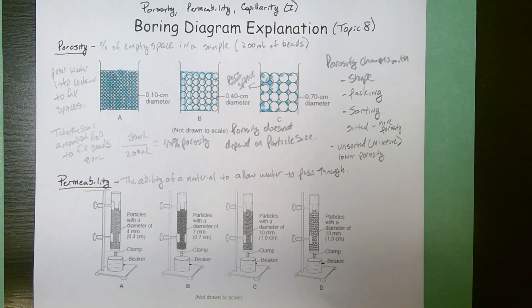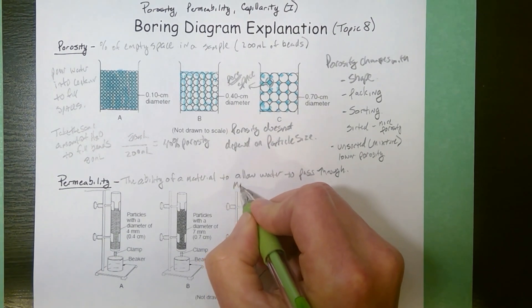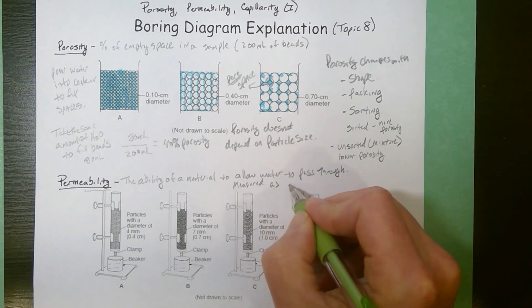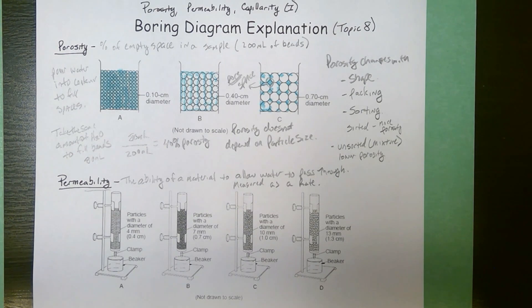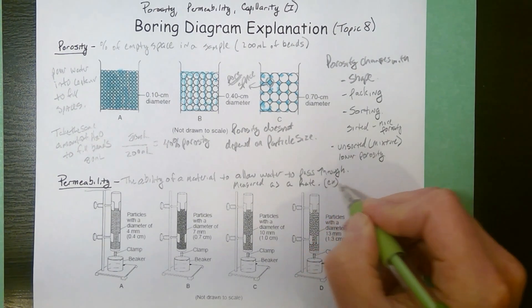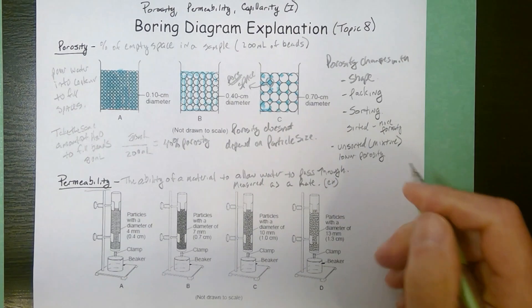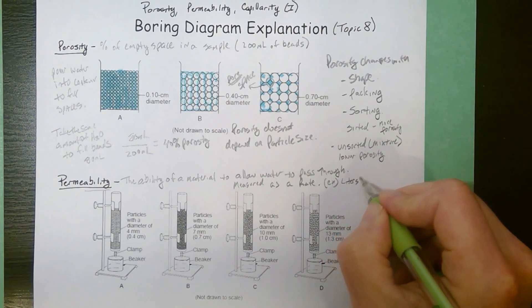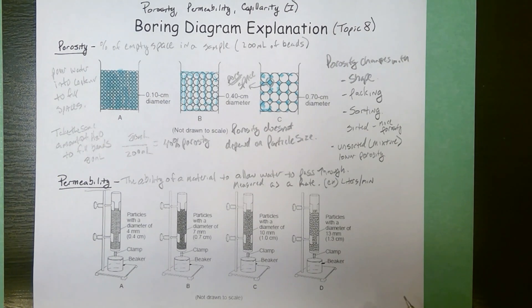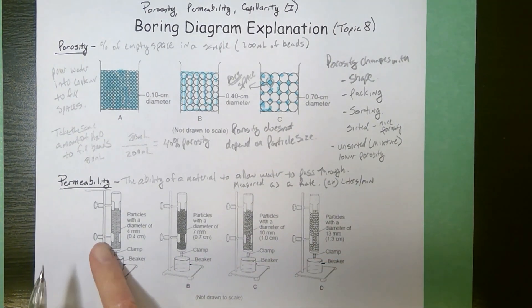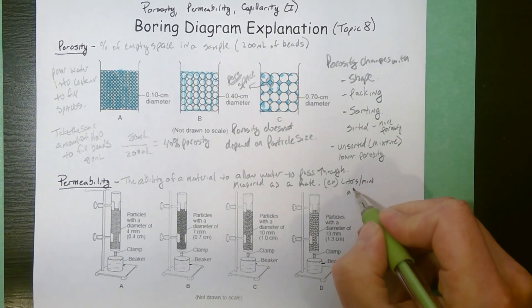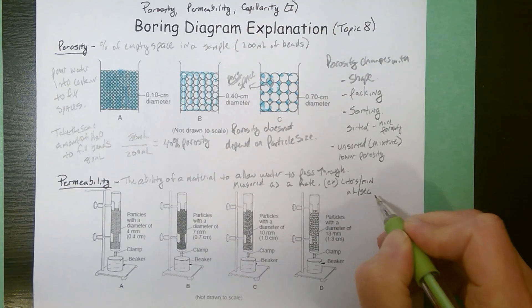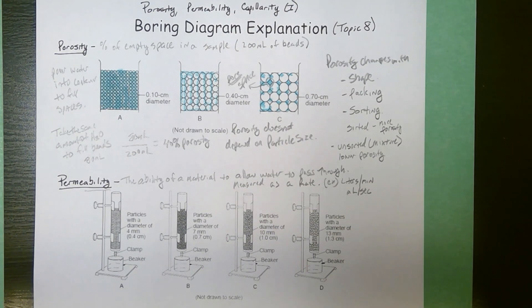When we're measuring permeability, we're going to measure it as a rate. So we want to see how fast the material can flow through. We might be talking something like the amount of liters per minute that can go through a soil. If you were doing one of these columns, these tubes that we set up to demonstrate this, you might talk about the number of milliliters per second which is able to flow through the material.